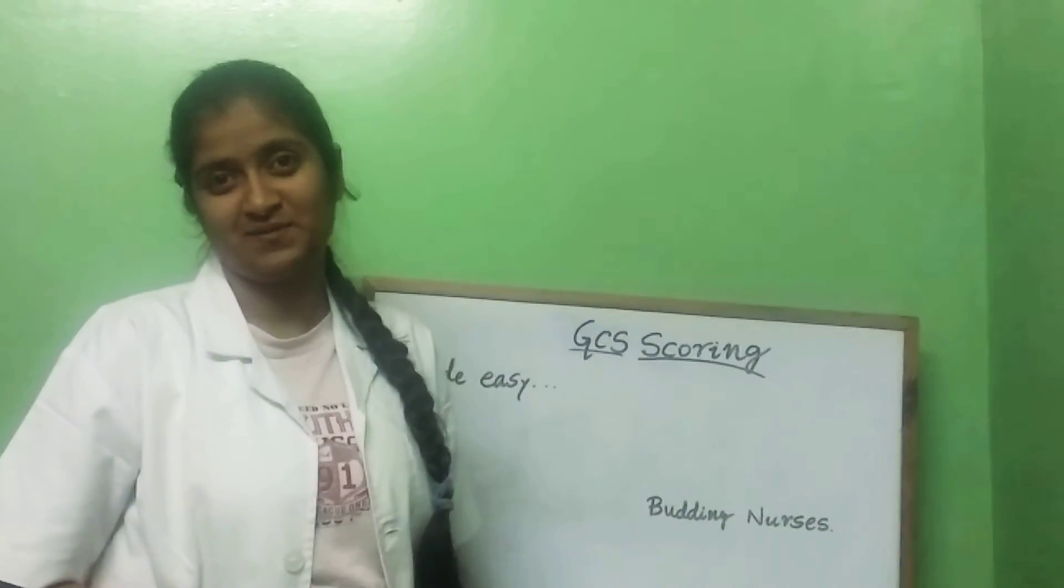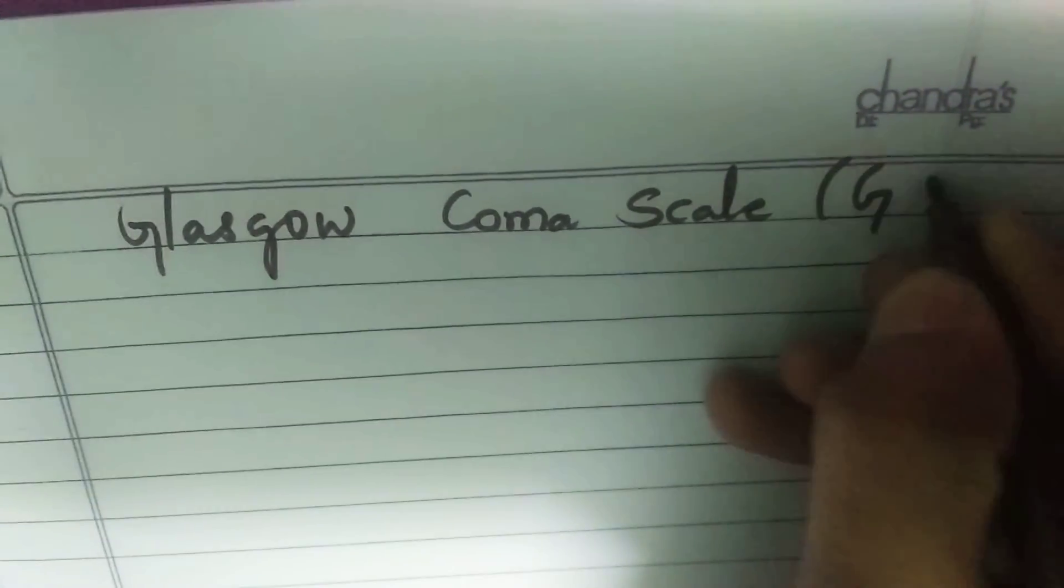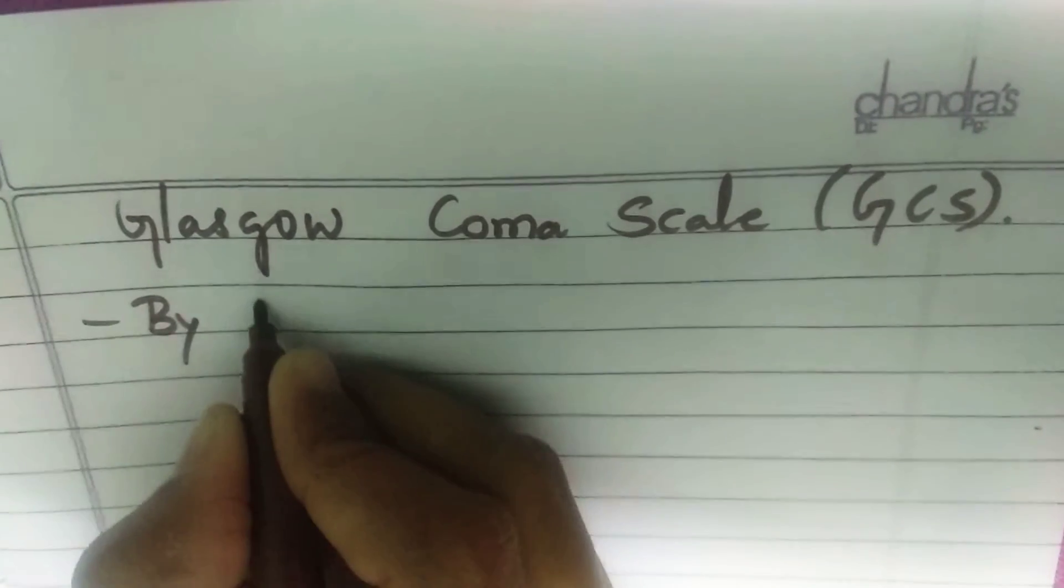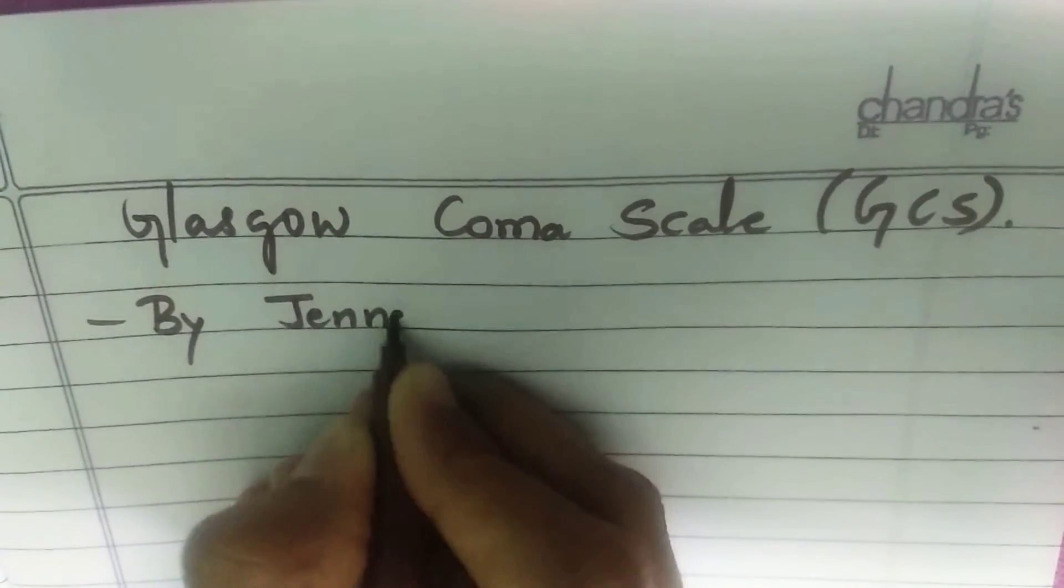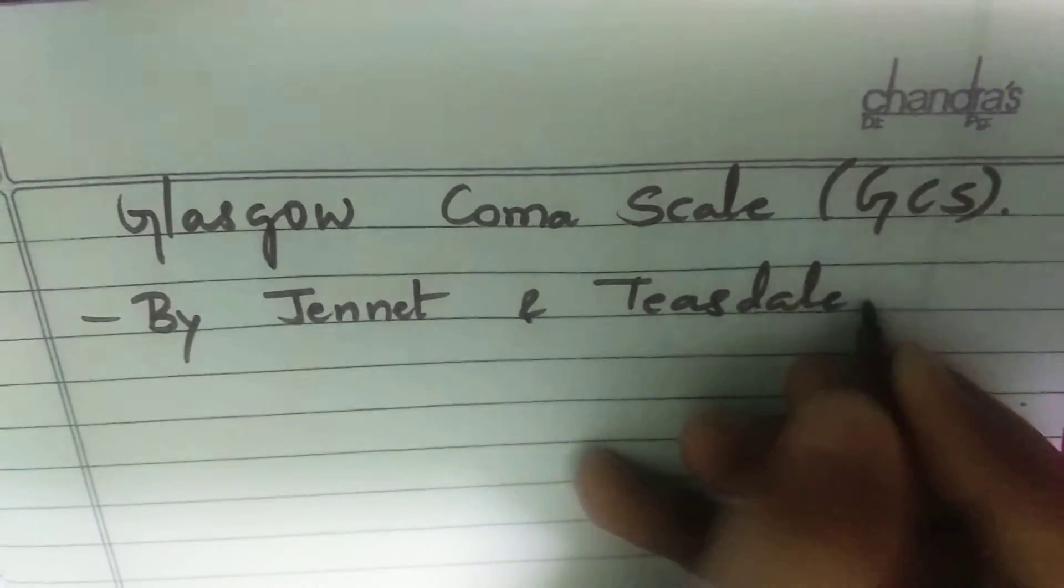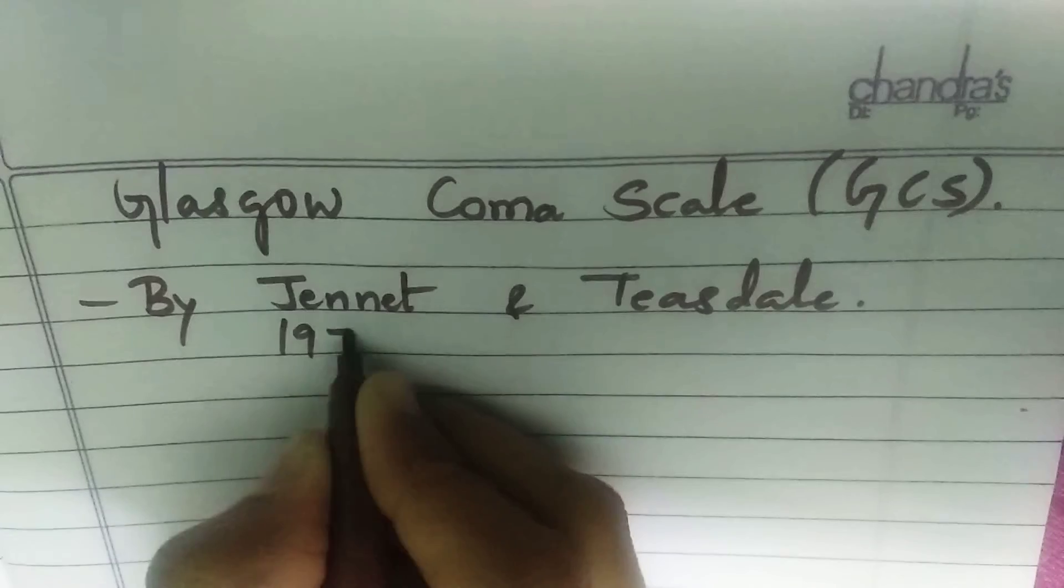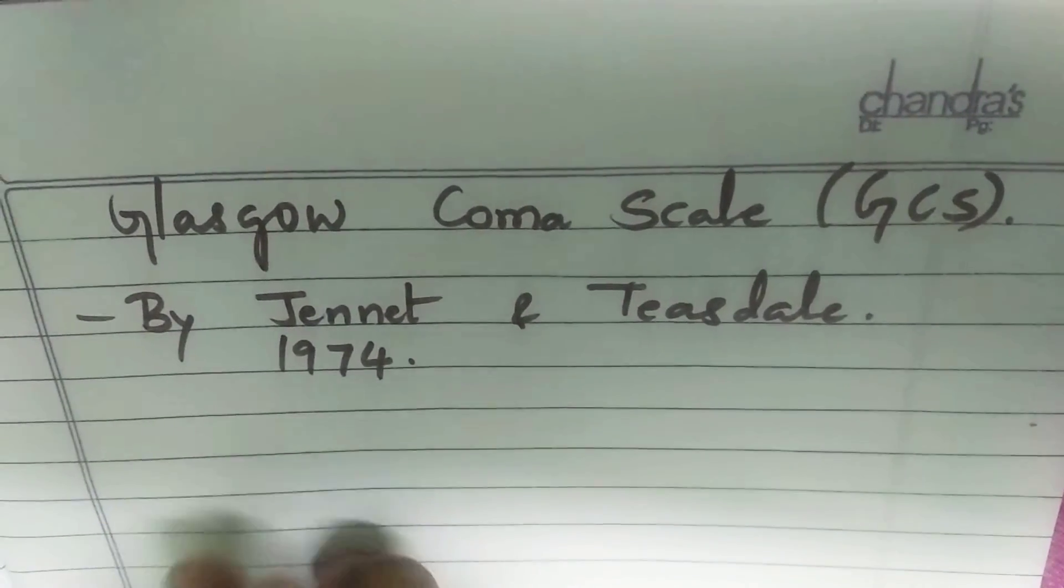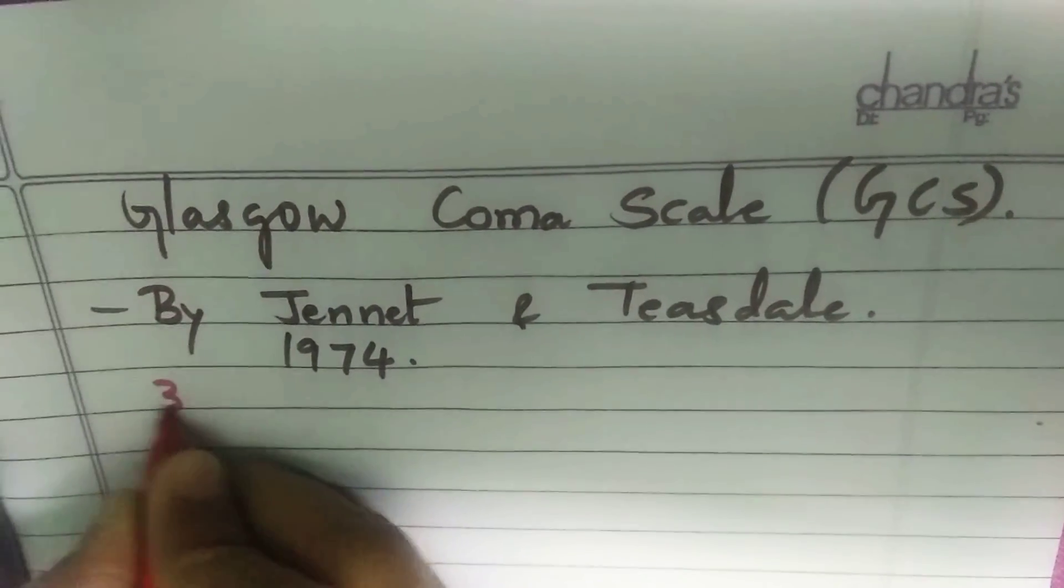Glasgow Coma Scale or GCS, this was being given by Janet and Teasdale in the year 1974. So these two people gave the Glasgow Coma scoring.